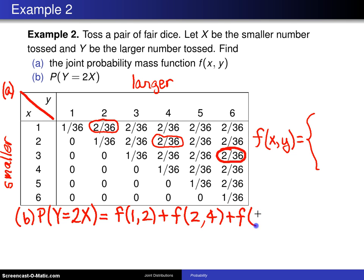f of 3, 6 and f of 1, 2 is 2/36. So this becomes 6 over 36, which is just 1/6.